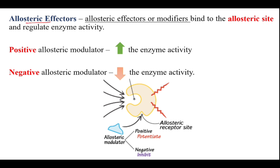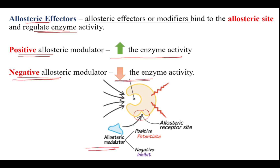Allosteric effectors: whatever effectors bind to this allosteric site are called allosteric effectors or allosteric modulators, and they bind to this site and regulate the enzyme activity. Positive allosteric modulators are those that increase the enzyme activity, and negative allosteric modulators are those that decrease the enzyme activity.